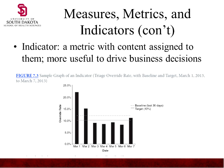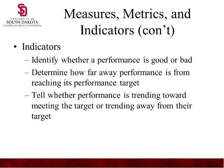An indicator is a metric to which context is assigned, making it more useful to drive business decisions. A sample indicator graph shows the triage override rate with a baseline and a target. The target is lower than the baseline — where we've been for the last 30 days. Some data points are way out of whack as outliers, and the why comes into play when they exceed the target.